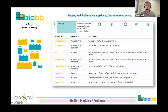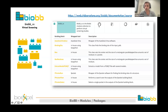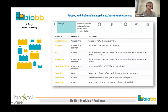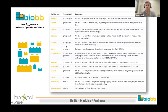For example, the virtual screening module contains all the different building blocks inside that category. On the main BioBB website you can find the GitHub repository with all source code, ReadTheDocs documentation, and the conda package, Docker container, and Singularity container. If you download or install one of these packages, you get all the functionalities together with all dependencies — AutoDock Vina will be installed by default, as will fpocket. Similarly, the GROMACS package integrates all sub-tools.